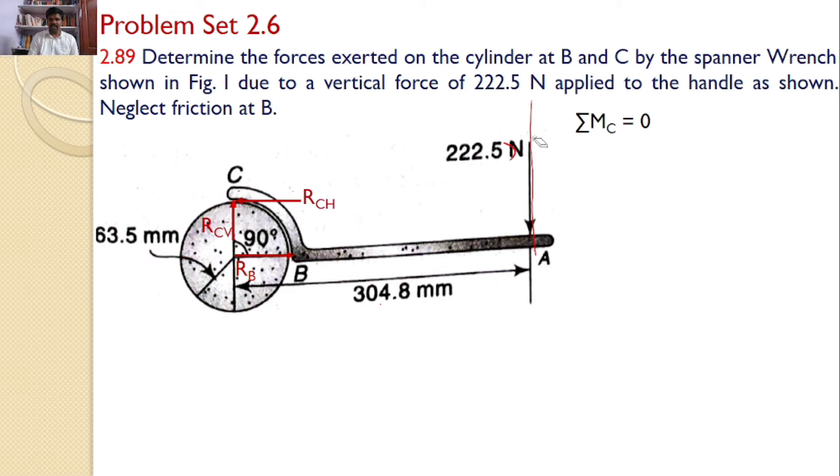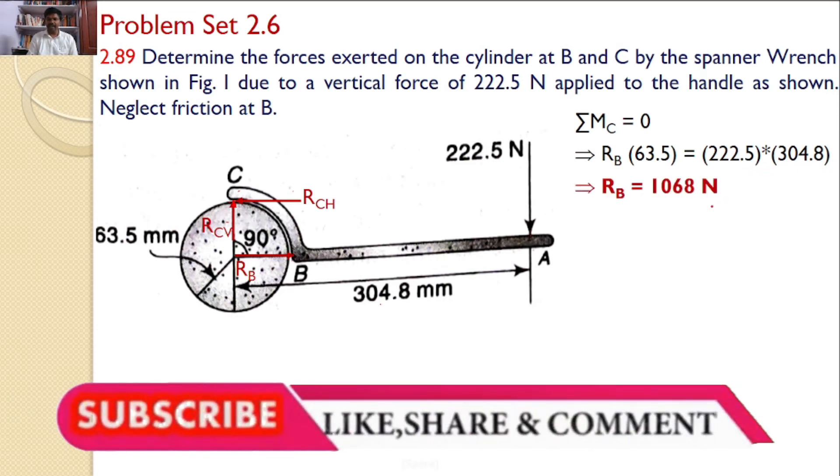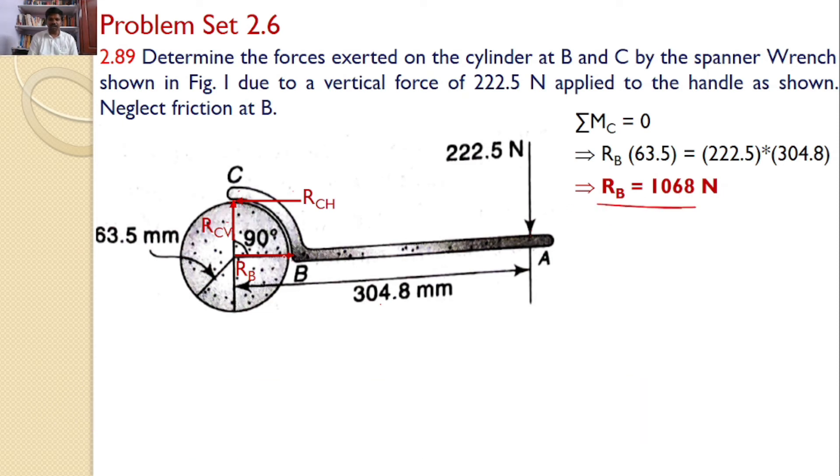Hence, right away, I can take the moments about point C. Rb into 63.5 equals 222.5 into 304.8, which gives the reaction at B, 1068 Newtons.